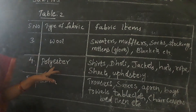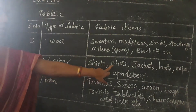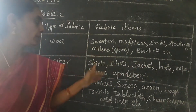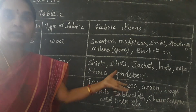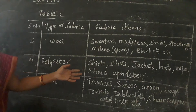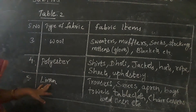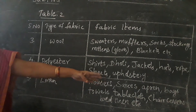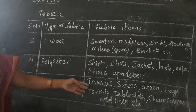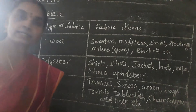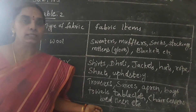Coming to polyester: polyester fabrics include shirts, dothi, jackets, hats, rope, sheets, and upholstery — things we use for decoration. Coming to linen clothes: linen is generally used for trousers, saris, aprons, bags, towels, tablecloths, chair covers, and bed linen.